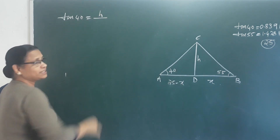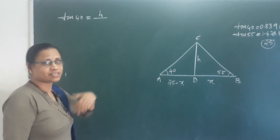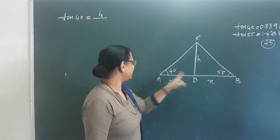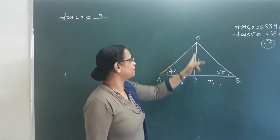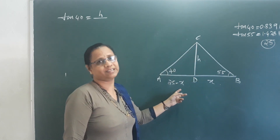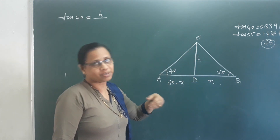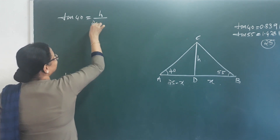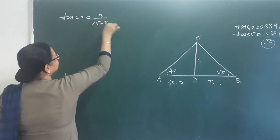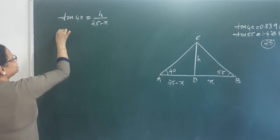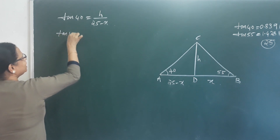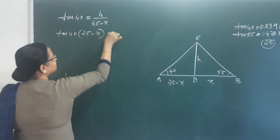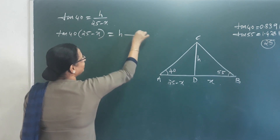We write opposite side by adjacent side: CD by AD. That gives us H by (25 minus X). Cross multiplying: tan 40 into (25 minus X) is equal to H. That is Equation number 1.